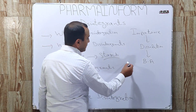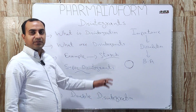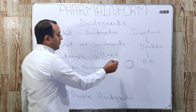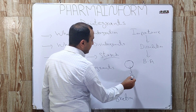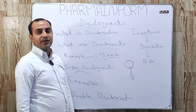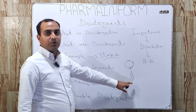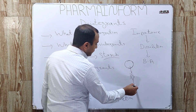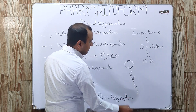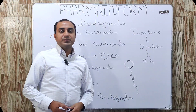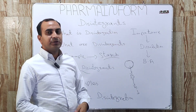The advantage of double disintegration is that the extra-granularly added disintegrants break the tablet into small fragments or granules, while the disintegrants added intra-granularly — before kneading — break those granules down into fine powder and release the drug.